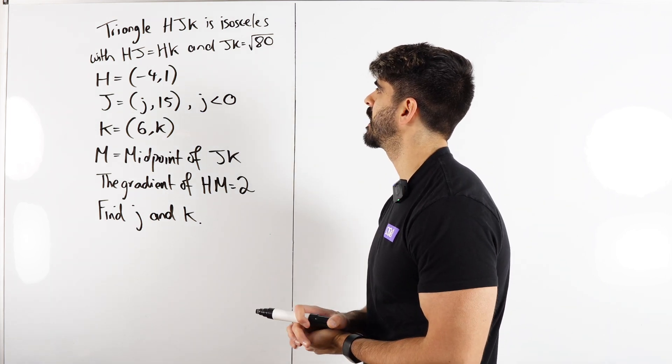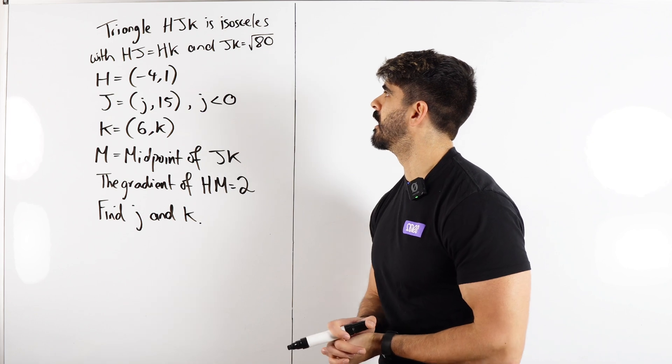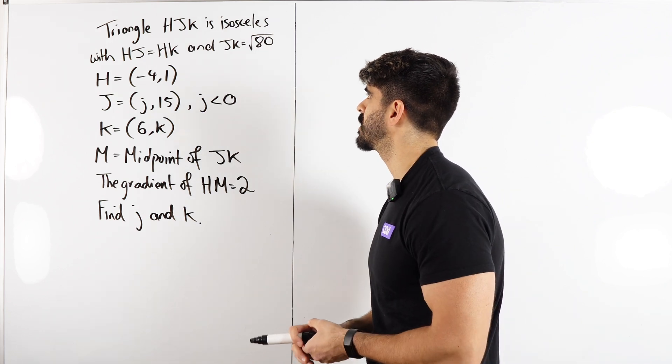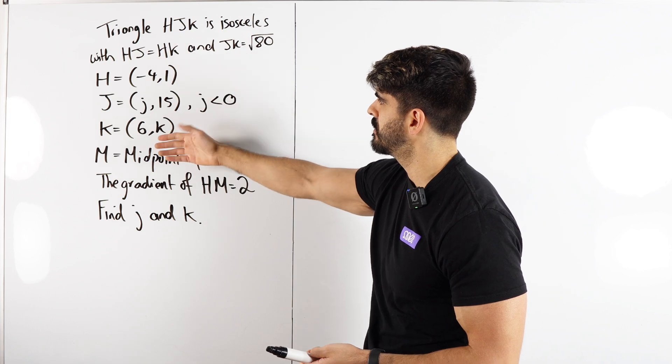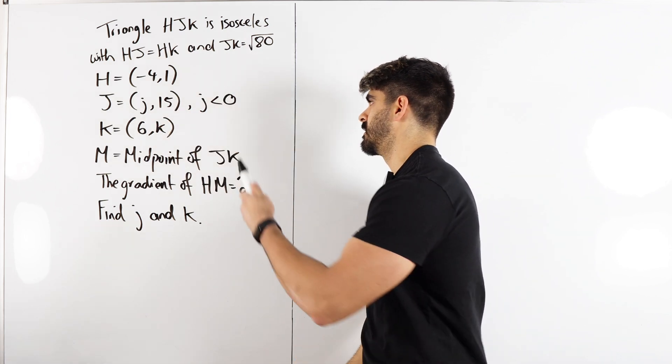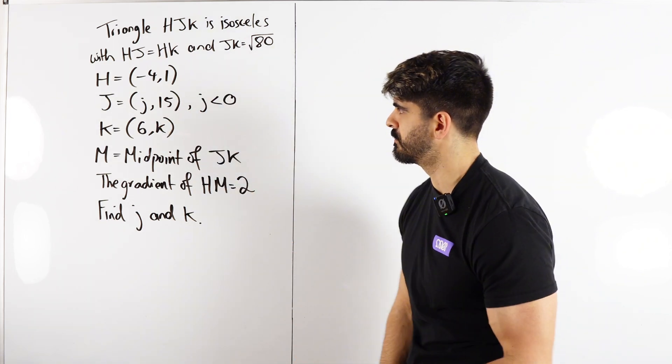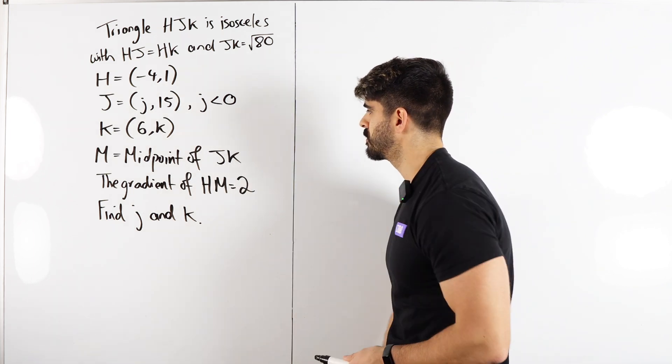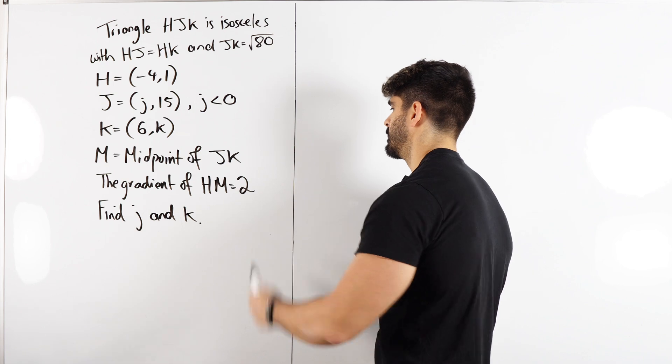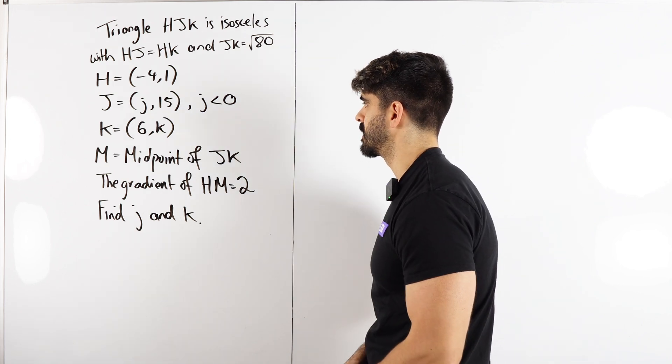Triangle HJK is an isosceles triangle with HJ = HK and JK = √80. Here are the coordinates of HJK: J and K are missing, well some part of their coordinates are missing. M is the midpoint of JK, the gradient of HM is 2. Find J and K.